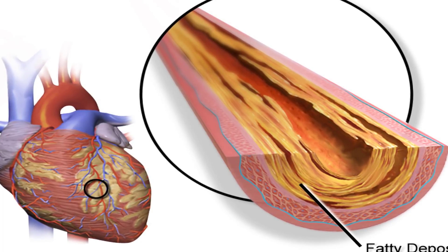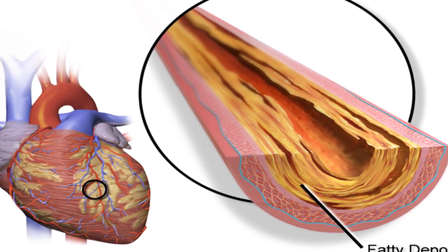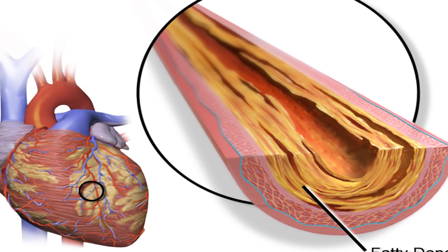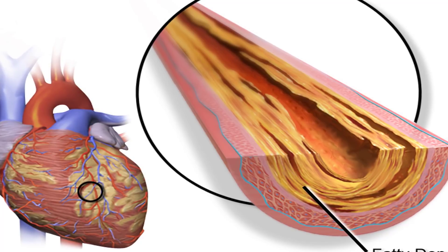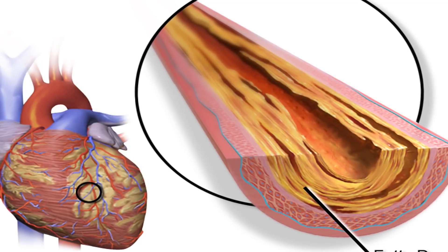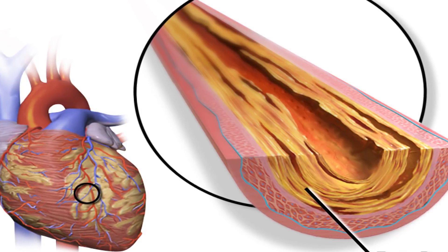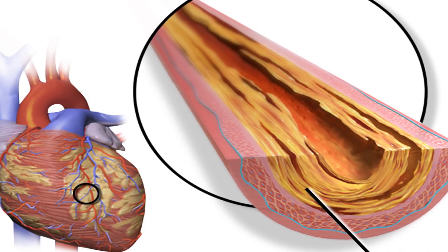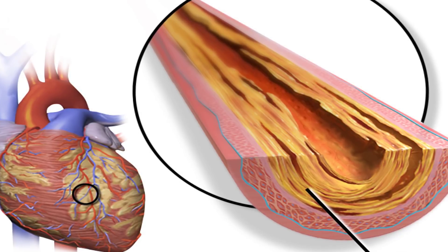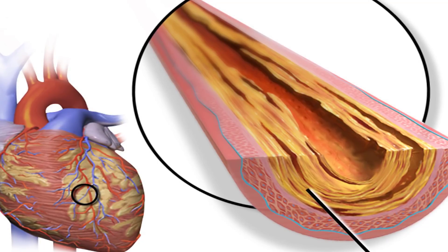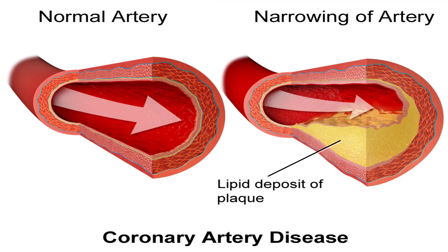Causes of coronary artery disease: The most common cause of CAD is plaque buildup in the arteries, or atherosclerosis. Reduced blood flow occurs when one or more of these arteries becomes partially or completely blocked. The four primary coronary arteries are located on the surface of the heart: right main coronary artery, left main coronary artery, circumflex artery, and left anterior descending artery.